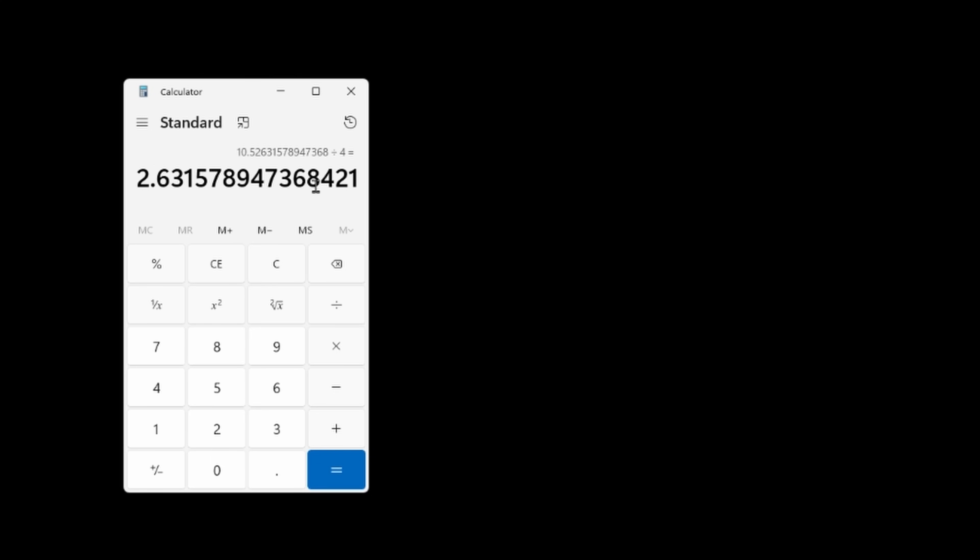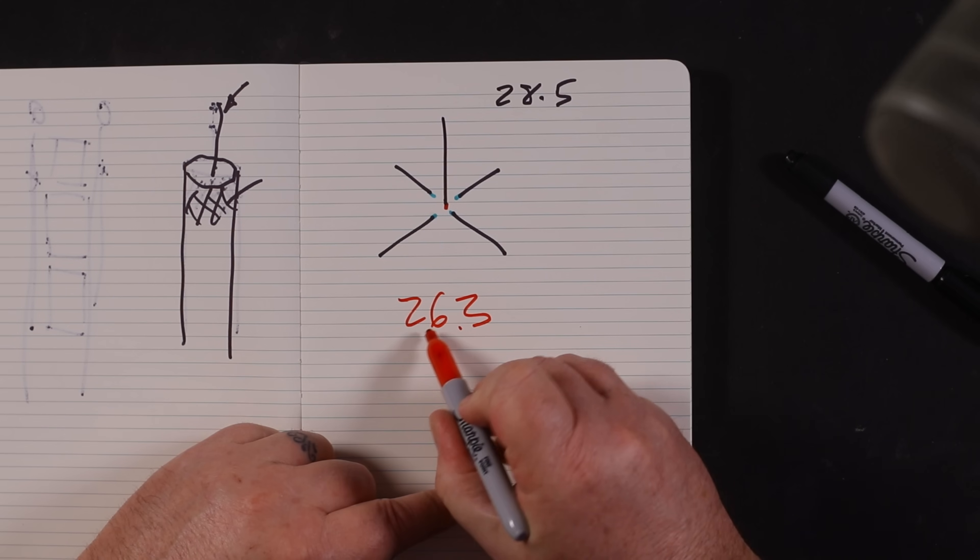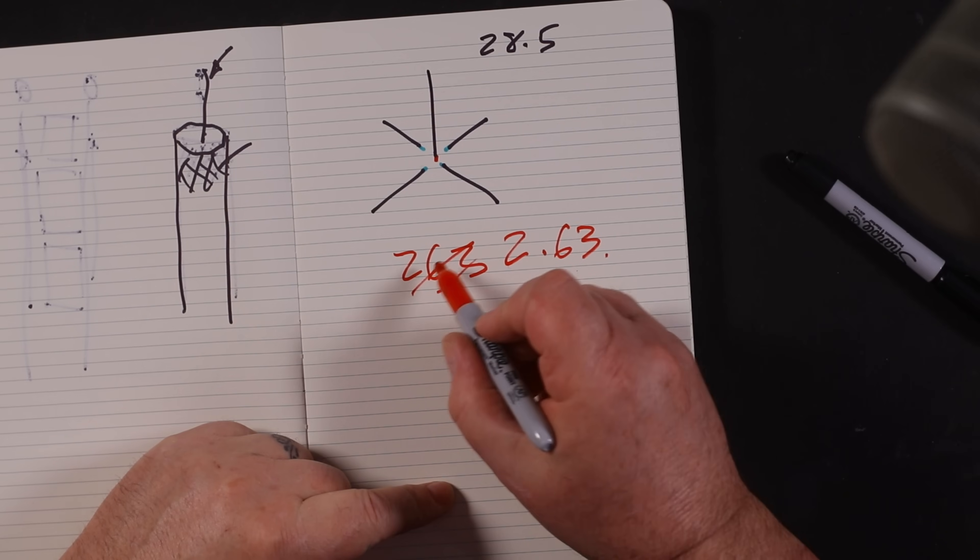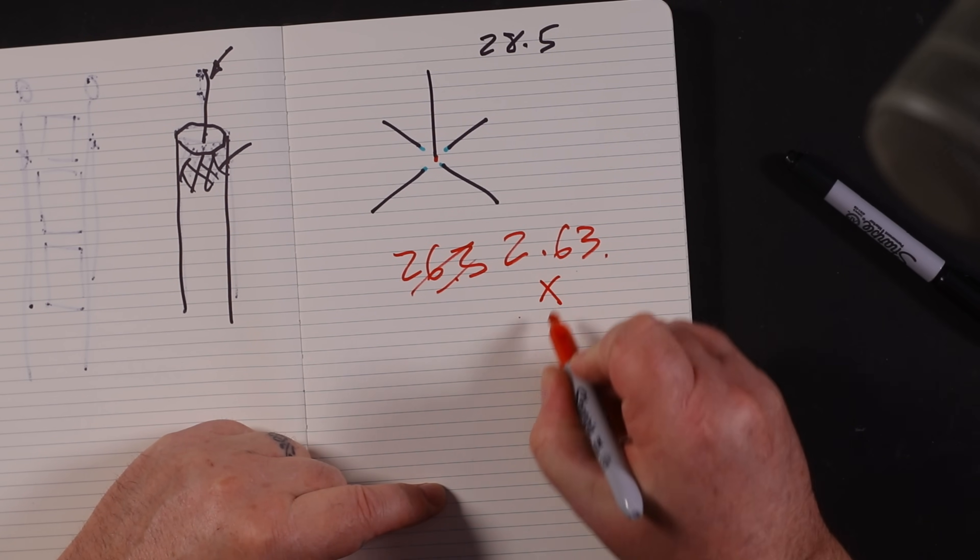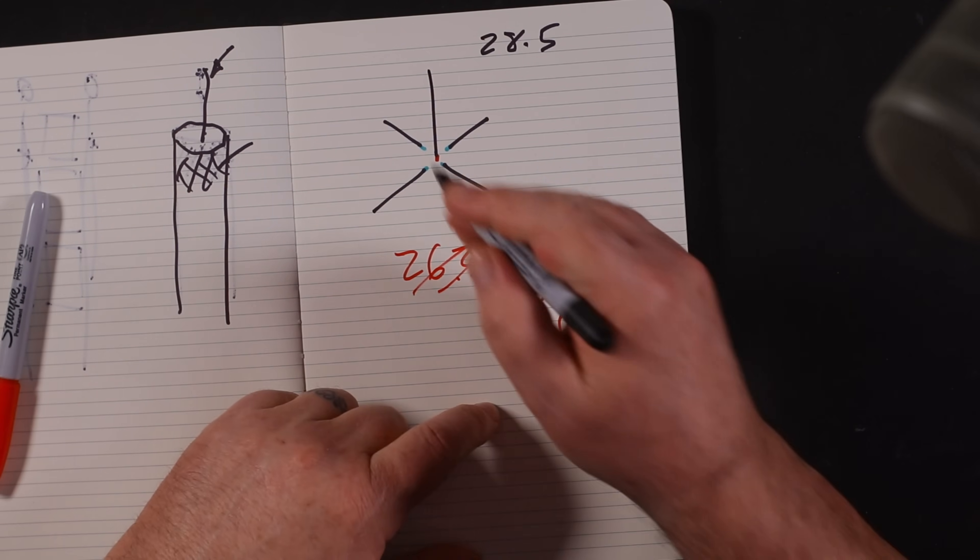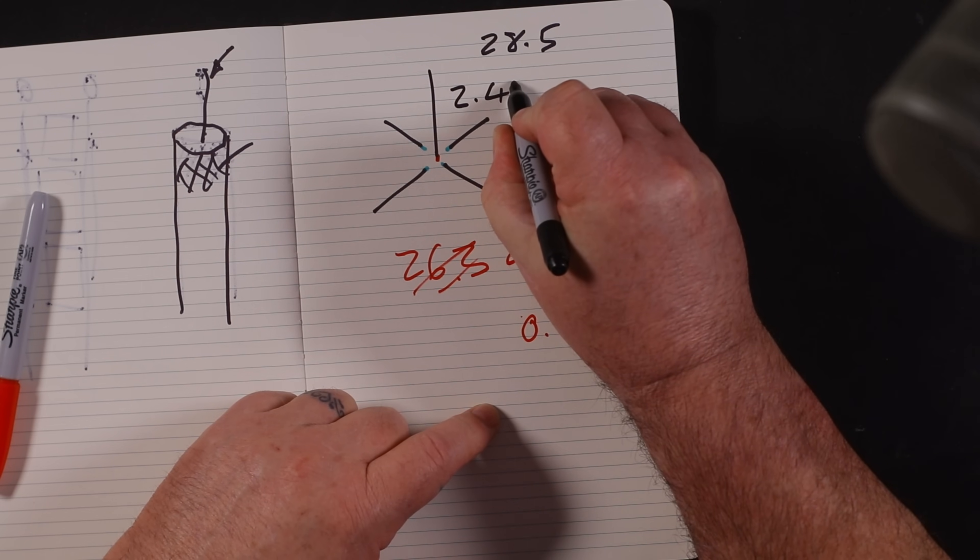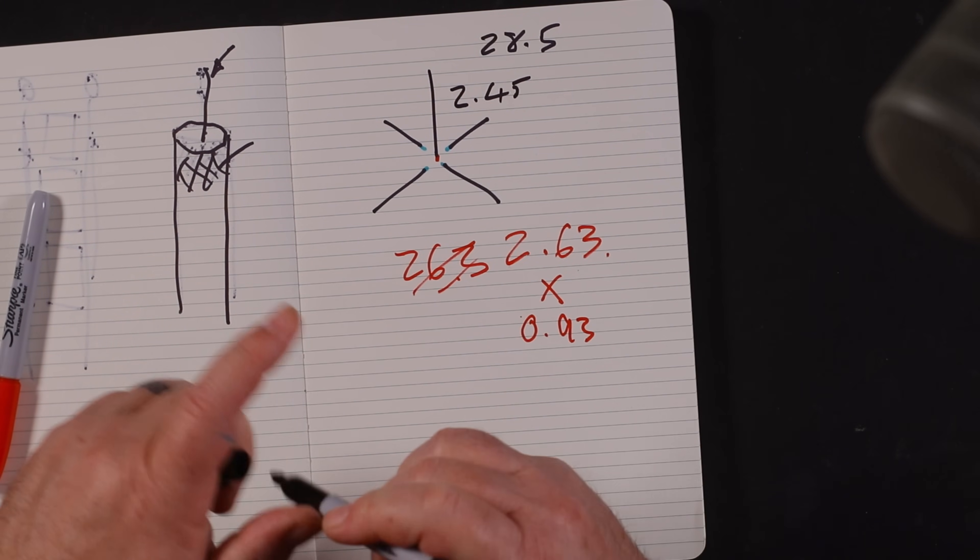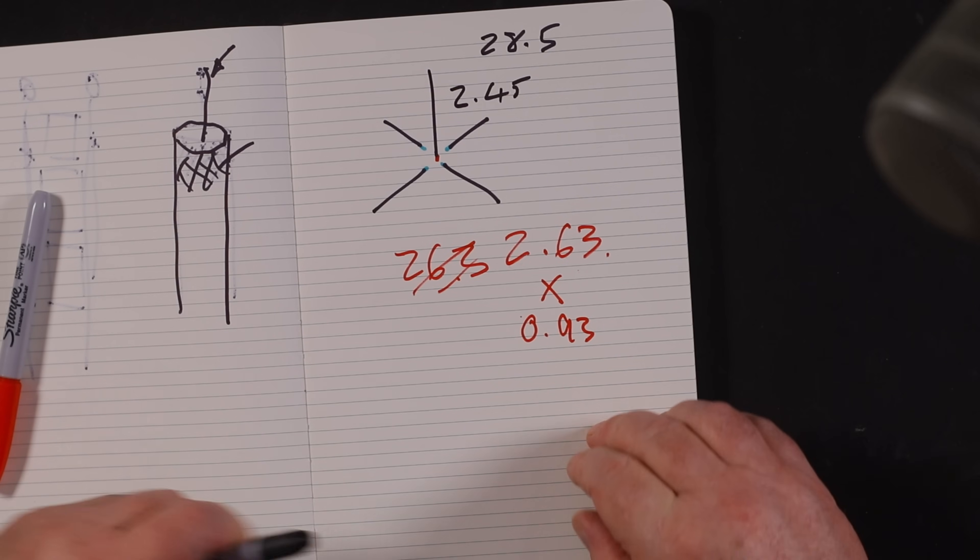So if we divide that by four we have 2.63 meters - about a man and a half in feet. Interestingly, if we multiply that by 0.93, we'll have a very accurate length if you really wanted to cut one of these: 2.45. That's because the velocity factor - how fast the RF travels up an insulated piece of wire - is about 92-93%.